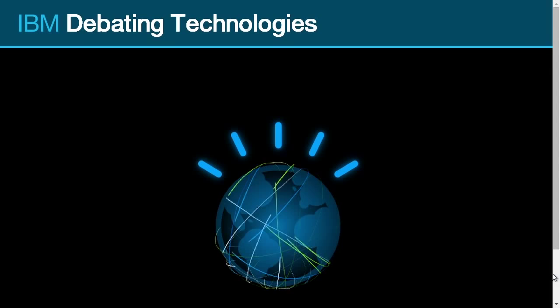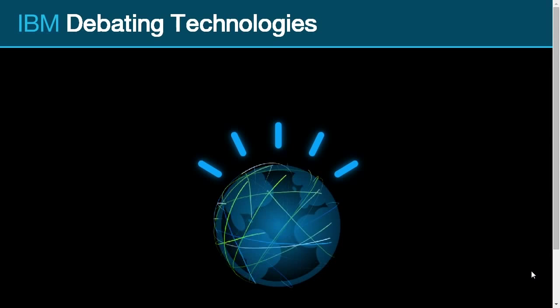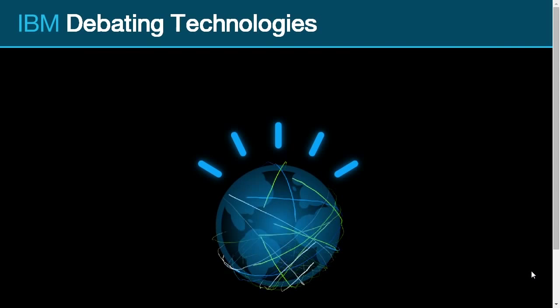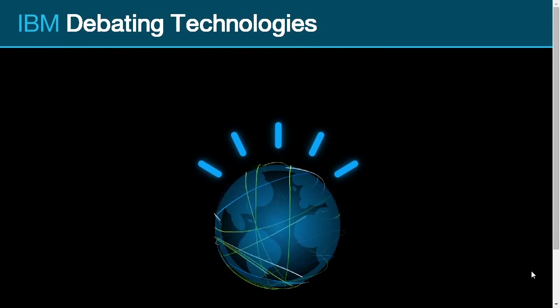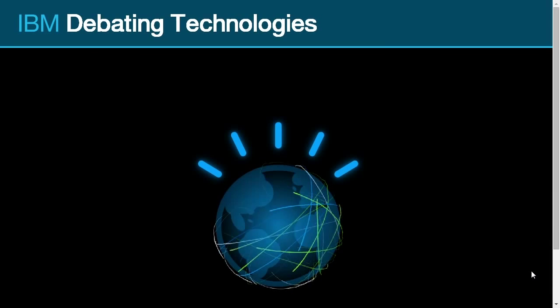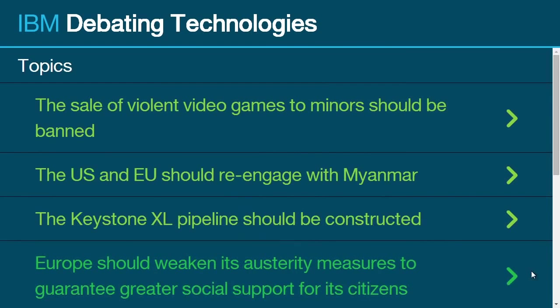If we could roll the video, please. Hello, and welcome to the IBM debating technologies demonstration. Today we shall focus on detecting relevant claims. To proceed, please select the topic, and I will share with you my top predictions for pro claims and con claims. So as I said, we could throw any subject at it. I've chosen some here, and let's just pick the first one — violent video games. Let's roll the first one.